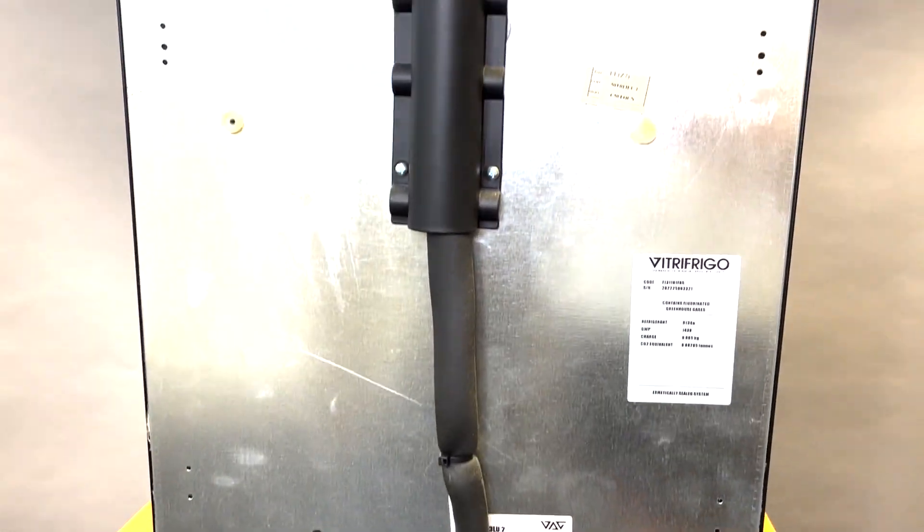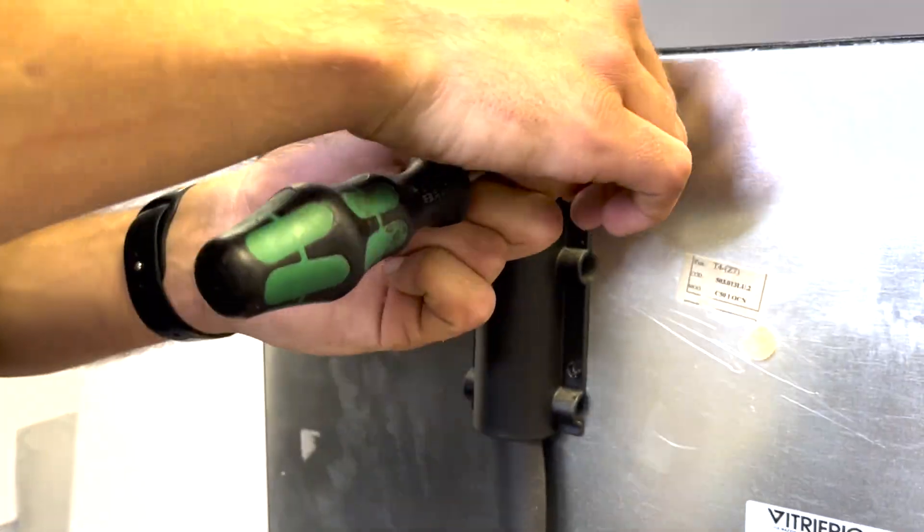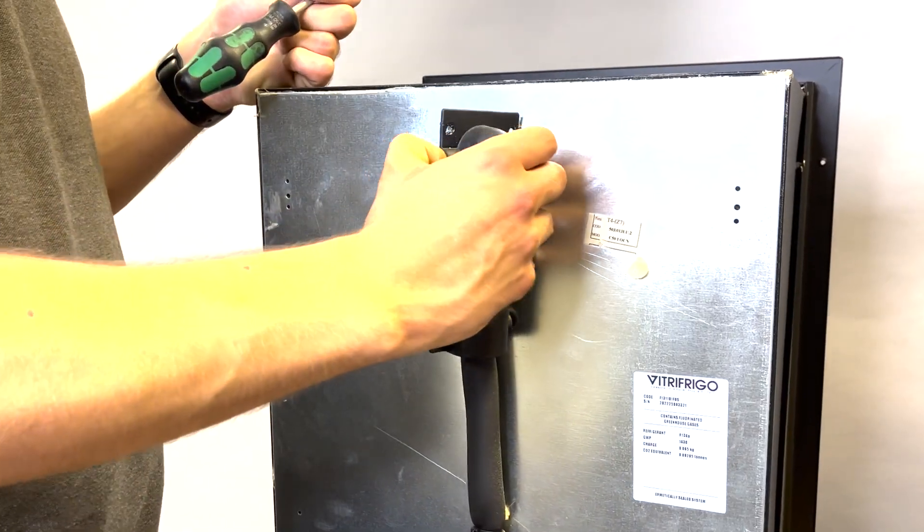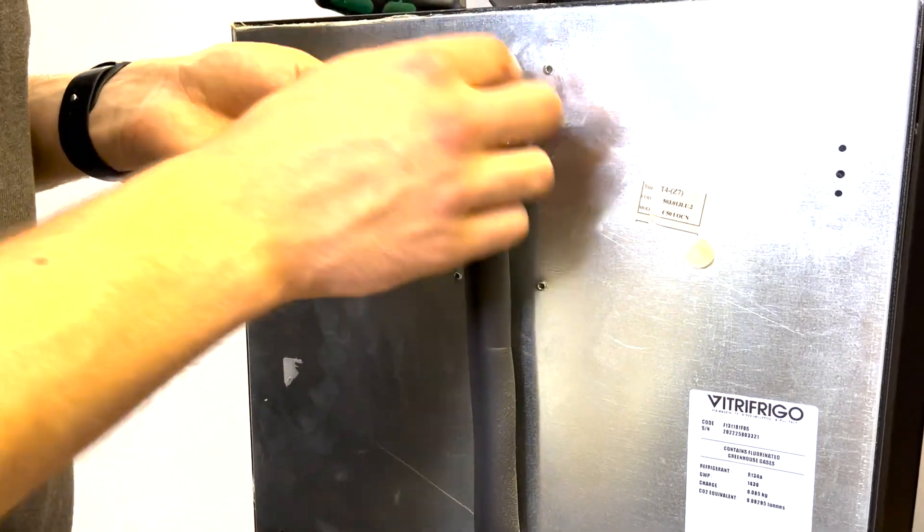Using a Phillips screwdriver, remove the four screws holding on the plastic cover on the back of the fridge. Carefully remove the sealant so that it can be reused.